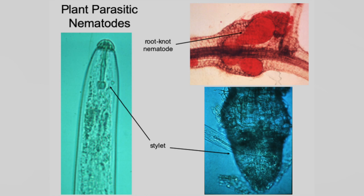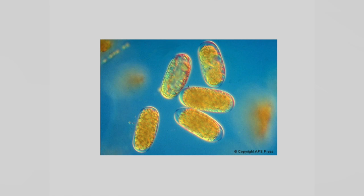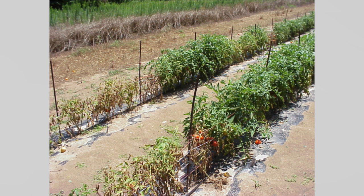Then of course we have nematodes — roundworms that live in soil. Root knot nematode is probably one of the biggest problems in tomato production in the state. These are the eggs, and they'll just sit there waiting for a plant root. When they sense compounds that leach out of the root, it causes them to hatch and feed on the plant. Nematodes really like sandy ground, but I've got bad root knot in my garden and it's not sandy — it's a loam — so you can get it in all kinds of soil types.